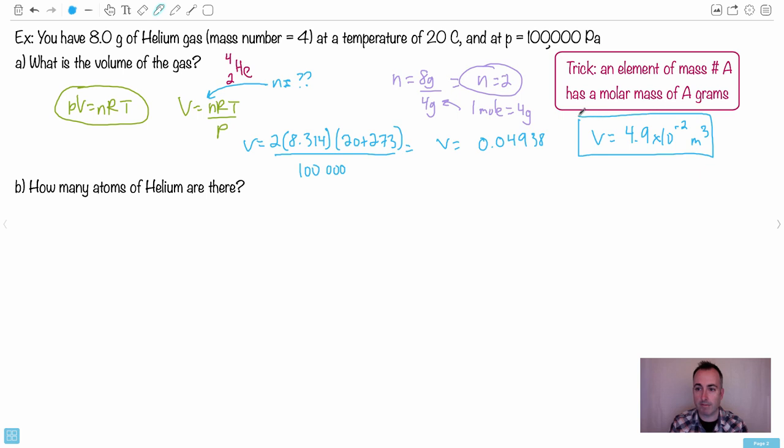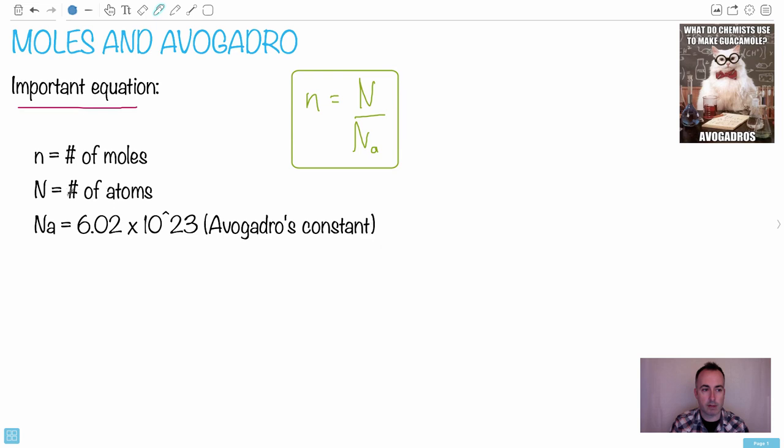All right, so that's my answer for my volume. Now, how many atoms of helium are there? Luckily, that's really easy now because we can just use this equation that n equals capital N over Na. The number of moles equals the number of atoms divided by Avogadro's number.